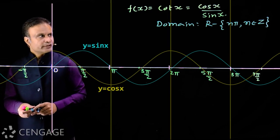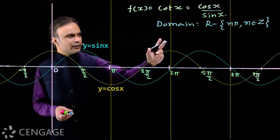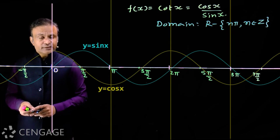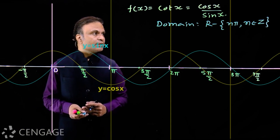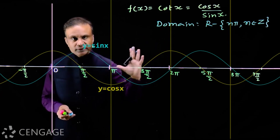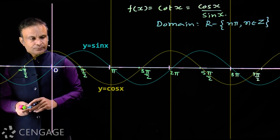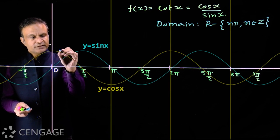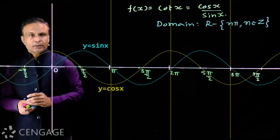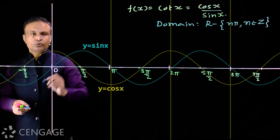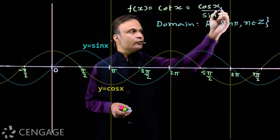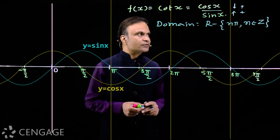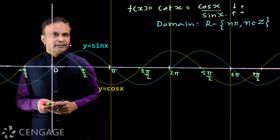In the first quadrant, x belongs to (0, π/2). We cannot take x = 0 because zero is an integral multiple of π and sin(0) = 0, making cot(x) undefined. In the first quadrant, cos(x) decreases from 1 to 0, while sin(x) increases from 0 to 1. That means the numerator is decreasing and the denominator is increasing, and both values are positive, so the ratio will decrease.